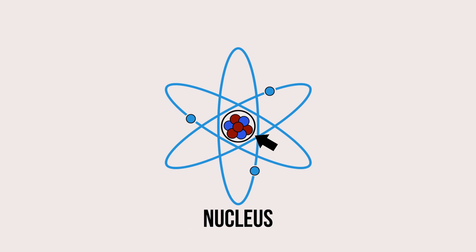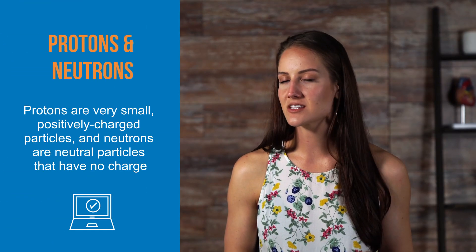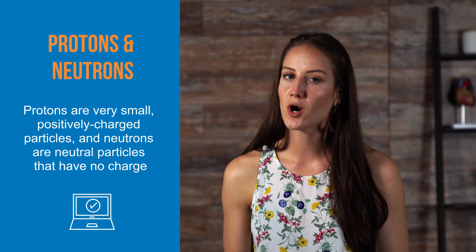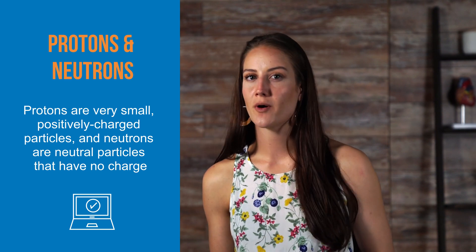At the very center of an atom is the nucleus, which is made up of small particles called protons and neutrons. Protons are very small, positively charged particles, and neutrons are neutral particles that have no charge.